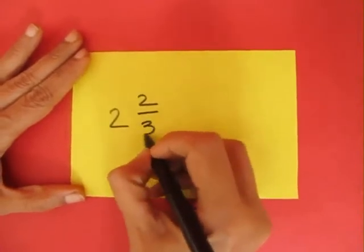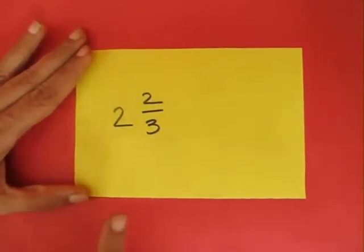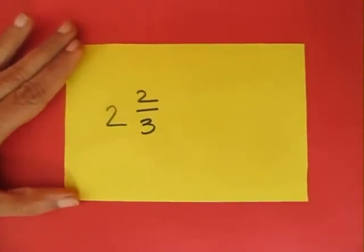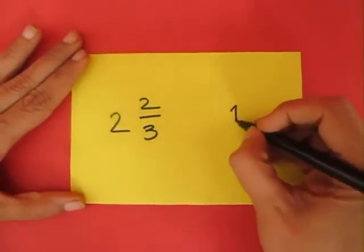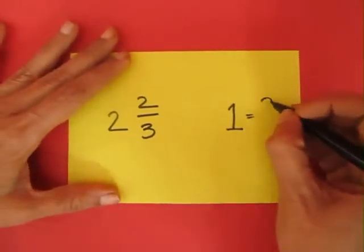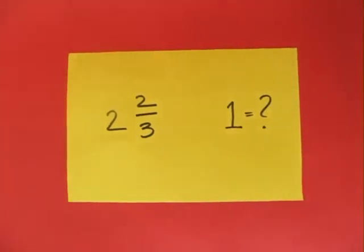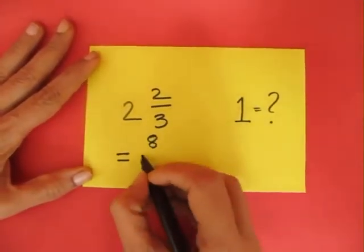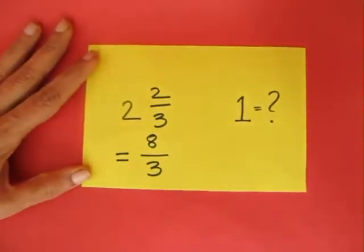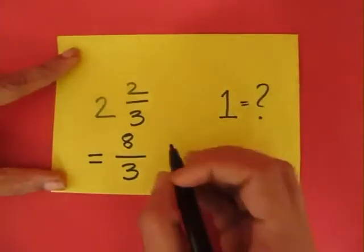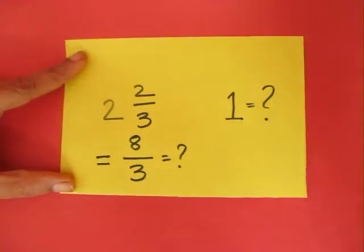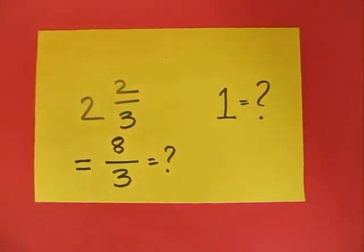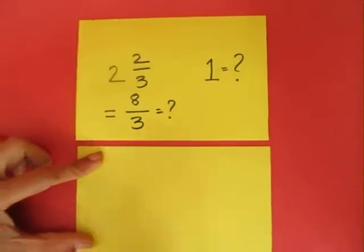There is a farmer who has 2 and 2 thirds of land and for some reason he wishes to sell 1 acre of land. Tell me how much is 1 acre given that this whole paper is 2 and 2 thirds of an acre. Now 2 and 2 thirds is 8 by 3 and how much is 1 acre? This makes it into a very pragmatic problem.